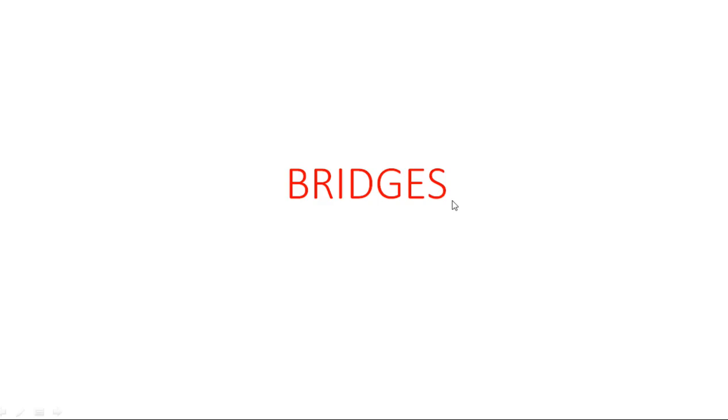In this video, I am going to introduce the concept of bridges. A bridge consists of four arms that may be pure resistance, reactance, or impedance — a combination of resistance and reactance such as R + jXL or R − jXC. The purpose of a bridge is to measure any unknown quantity like resistance, capacitance, inductance, or even frequency.